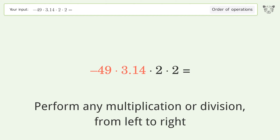Let's solve it step by step. Performing multiplication and division from left to right: negative 49 times 3.14 equals negative 153.86.